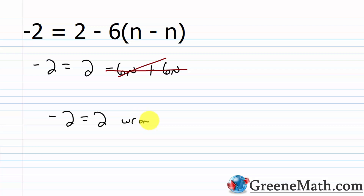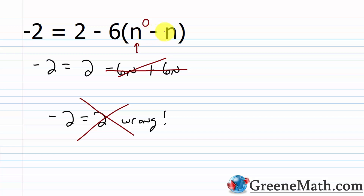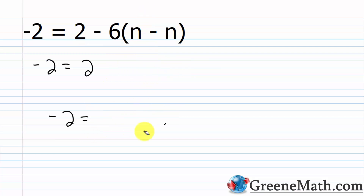Negative 2 doesn't equal 2 — this is wrong. Nothing is ever going to work, because if I put something in for n, I subtract it away, getting 0. I multiply 6 times 0 and get 0. So I'm always left with negative 2 equals 2 once I simplify, no matter what I choose for n. There's no value of n that can ever make this a true statement, so this is a contradiction.